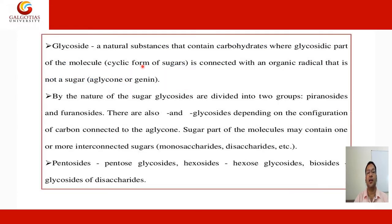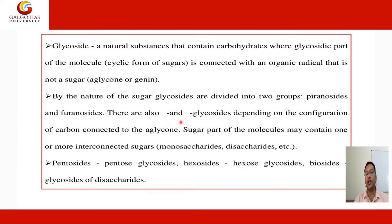Glycosides are natural substances that contain carbohydrates where the glycon part of the molecule — the cyclic form of the sugar — is connected with an organic radical, the non-sugar part, also called aglycon or genin. By the nature of the sugar, glycosides are divided into pyranosides and furanosides. They are also classified depending on the configuration of the carbon connected to the aglycon. The sugar part of the molecule may contain one or more interconnected sugars: monosaccharides or disaccharides — pentosides (pentose glycoside), hexosides (hexose glycoside), and biosides (glycosides of disaccharides).